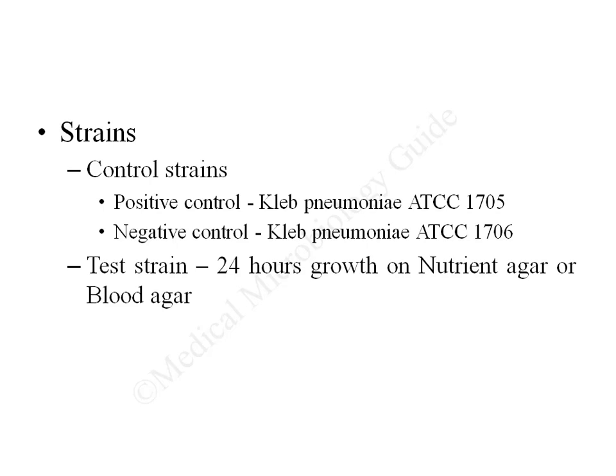We require a positive control — Klebsiella pneumoniae ATCC-1705 — and a negative control — Klebsiella pneumoniae ATCC-1706. Test strains should be grown on nutrient agar for 18 to 24 hours and should be fresh. If you are using clinical isolates from samples, use 18 to 24 hours growth on blood agar.